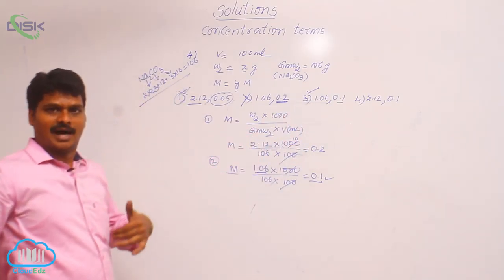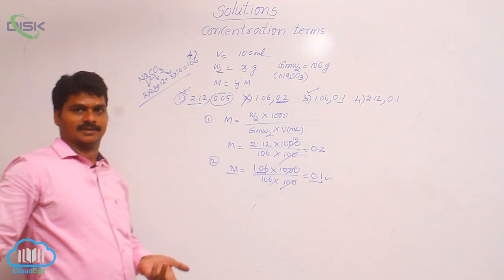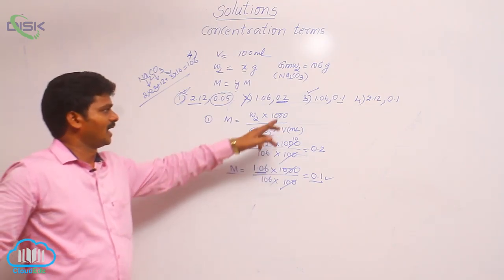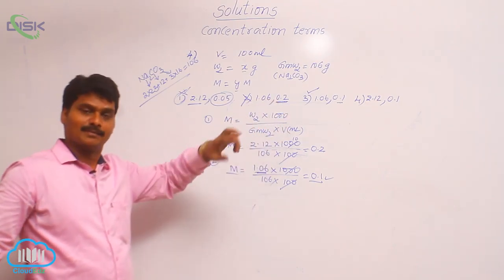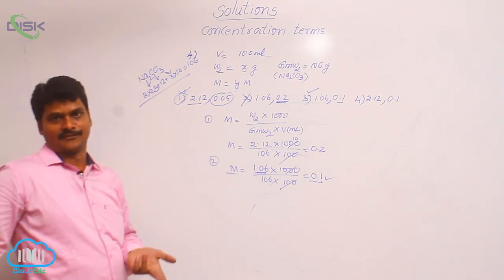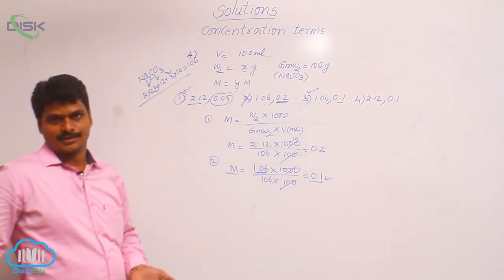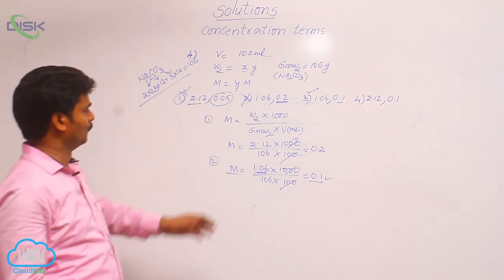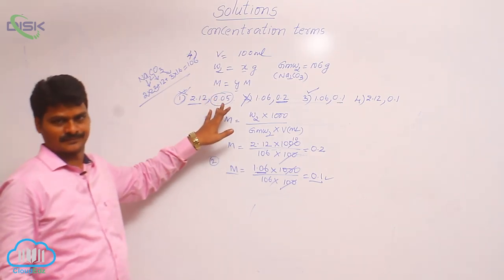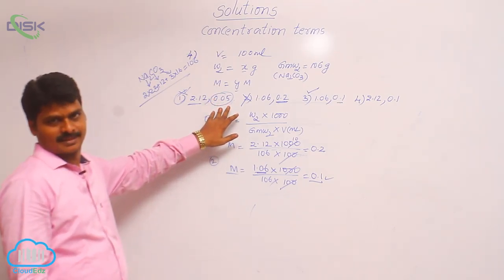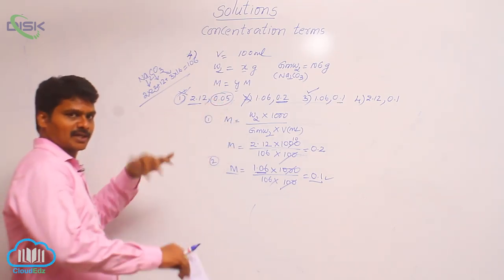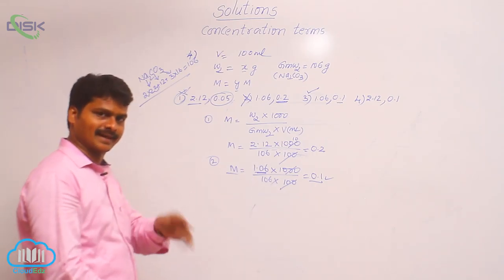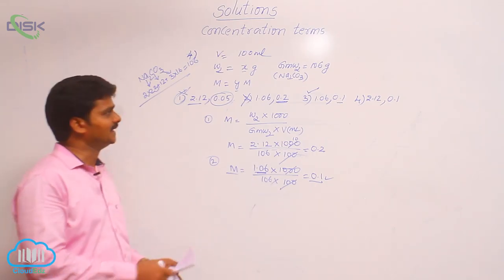So in objective-type question papers, sometimes two terms will be missing from the formula. If two terms are missing, go to verification — verify each option by substituting the first value, and if you get the second value, that is the correct answer.